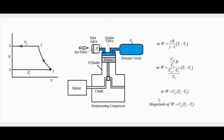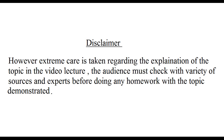So this is the work done expression for the cyclic process of a reciprocating compressor. I hope you have understood the working of a reciprocating compressor and how to derive the work done expression. Thank you.